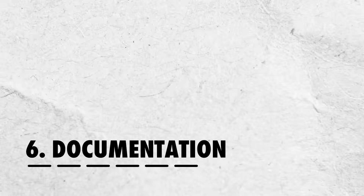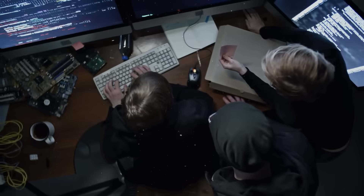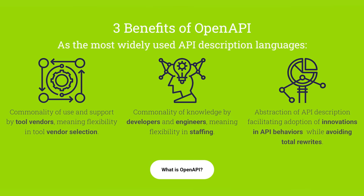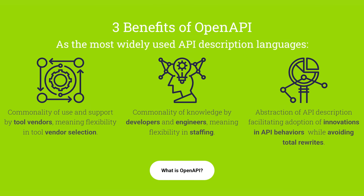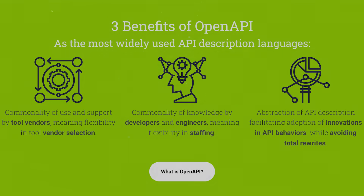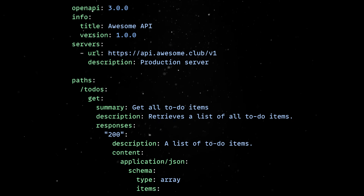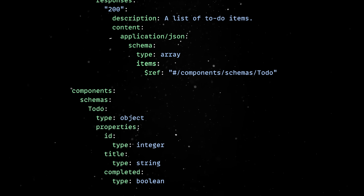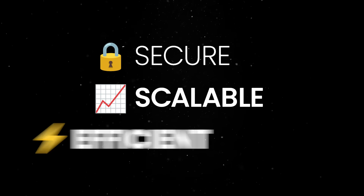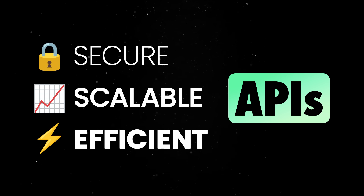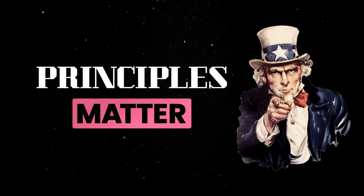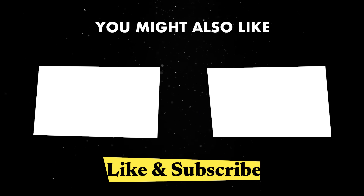Another important aspect that is rarely discussed is API documentation. Luckily, there are standardized tools and practices that make this process easier, ensuring that APIs remain understandable and maintainable. The OpenAPI specification is considered the industry standard for documenting RESTful APIs. It provides a structured way to define endpoints, expected request parameters, response formats, authentication methods, and error handling. So remember that designing a secure, scalable, and efficient API isn't just about following best practices, but also about understanding why these principles matter.